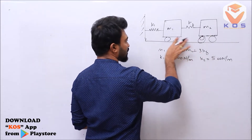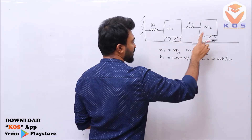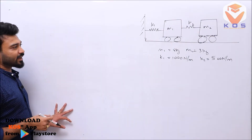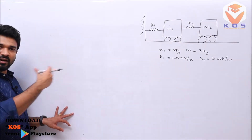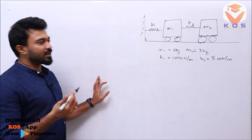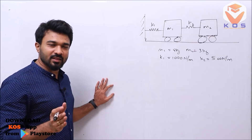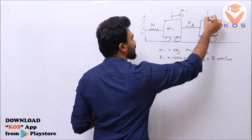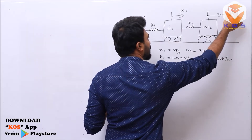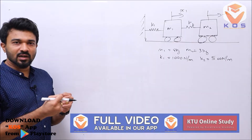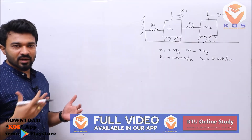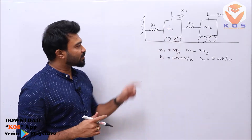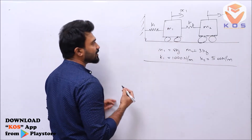Here we have two masses connected by two springs. We have displacements x1 and x2. Since m1 and m2 are different masses connected by springs k1 and k2, x1 and x2 are different displacements. We start with the characteristic equation.